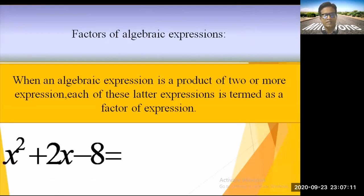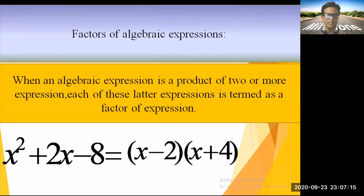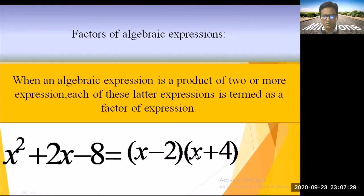For example, x² + 2x - 8 can be written as (x - 2)(x + 4). These are the factors of this expression. Now let's understand how to find these factors.